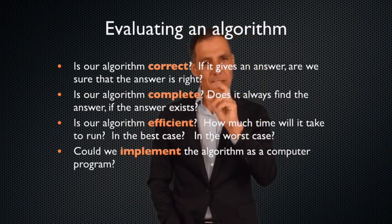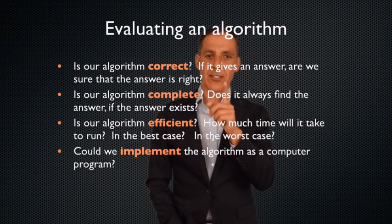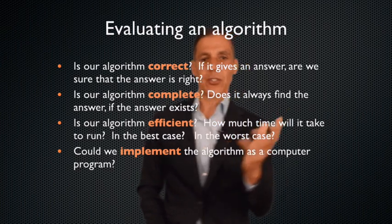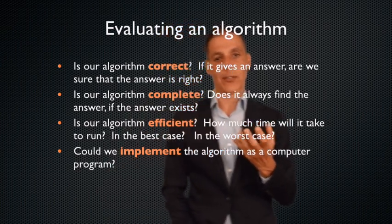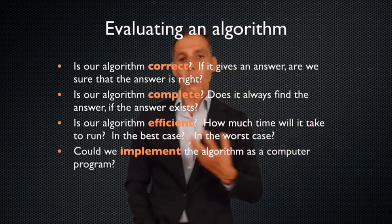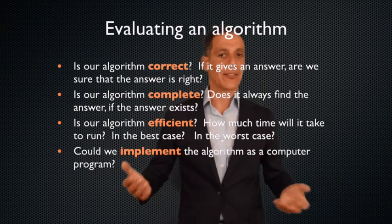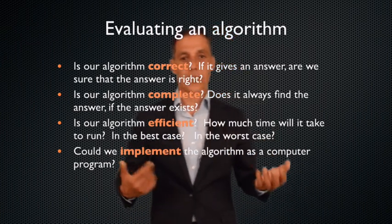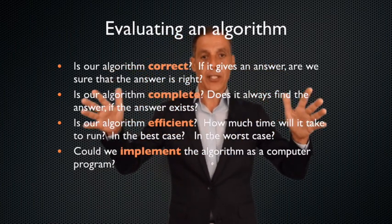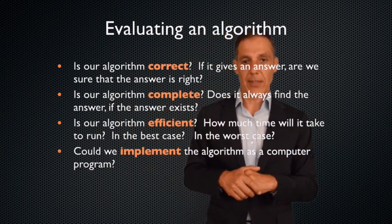Is the algorithm complete? And notice this is a little bit different than correctness. Here, it says, does it always find the answer if the answer exists? This is, have you considered all possible situations? So it's not just that I got an answer and the answer is right. It's, have you considered all possible situations of what your input looks like? And the counting class is the configuration of the class, where are the students sitting, and so forth.